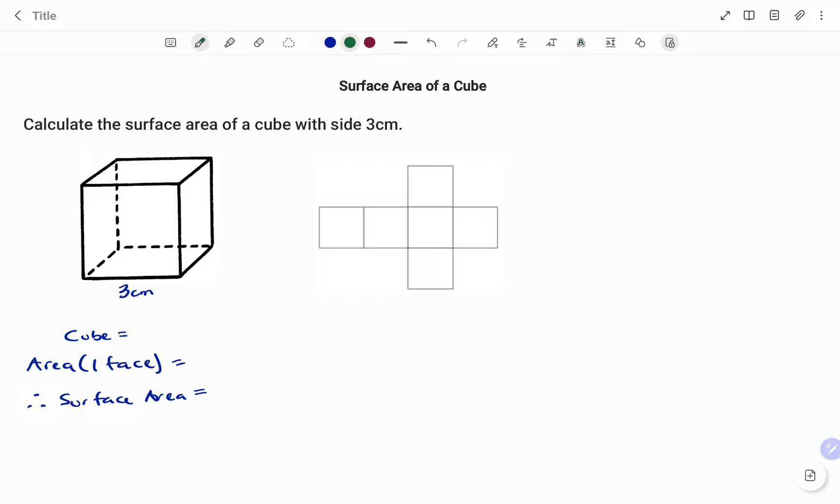The surface area of any 3D shape is the total area of the outside of the shape. A cube has all its lengths equal, so if that is 3 centimeters, we have this as 3 centimeters. Also, looking at the net of the cube...